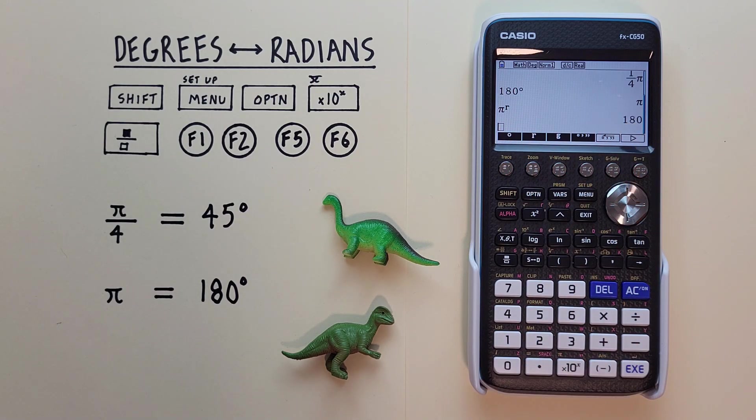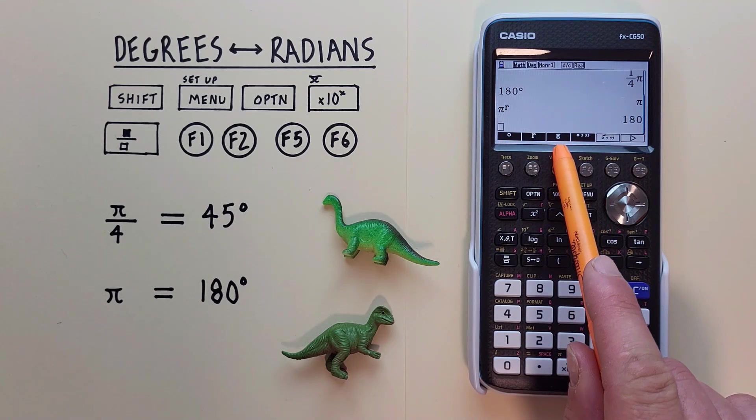If we wanted to convert gradians instead of degrees or radians, we would follow the same steps, except choosing grad from the setup menu and G from the angle menu.